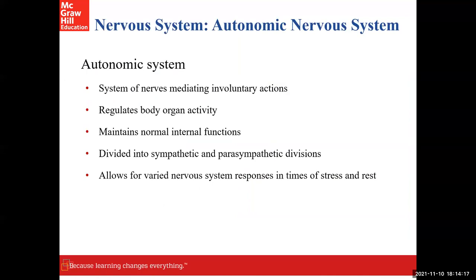You have the somatic nervous system and the autonomic nervous system. When we start talking about the organization of the overall nervous system from a structural standpoint — that's more or less the anatomy of the nervous system — you have a central nervous system and a peripheral nervous system. The central nervous system includes the brain and the spinal cord, and the peripheral nervous system is everything else, which is pretty much the nerves and the ganglia. A ganglia is a cluster of cell bodies out in the periphery.